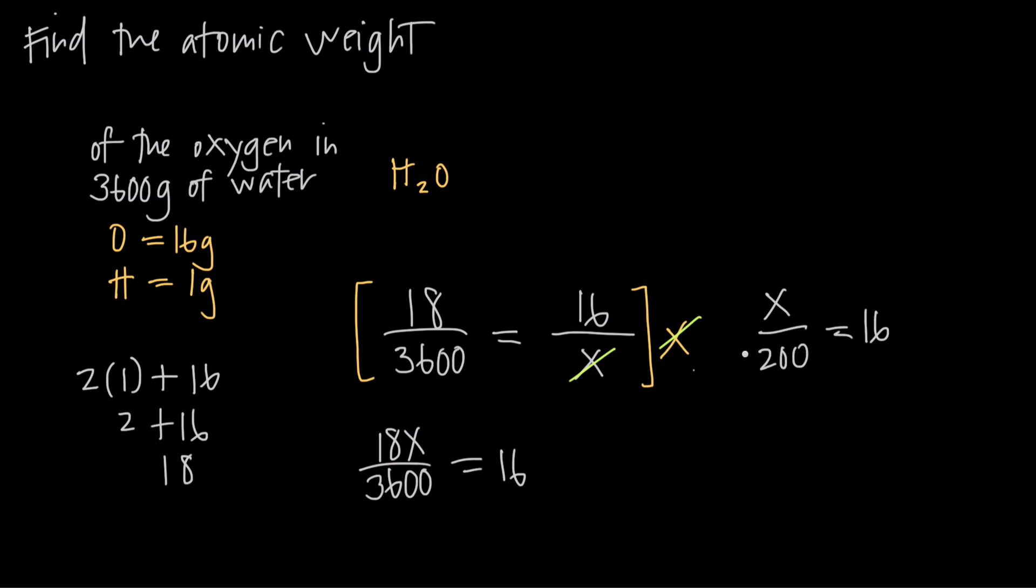Now, instead of having to multiply by 3,600, I only have to multiply by 200 because we were able to reduce that fraction. So I'm going to multiply both sides by 200. That'll get my 200 over here in the denominator to cancel with this 200 in the numerator, so that's just going to leave me with X on the left-hand side. On the right-hand side, 16 times 200 is going to give me 3,200, and since we've been working in grams, I can call that 3,200 grams.